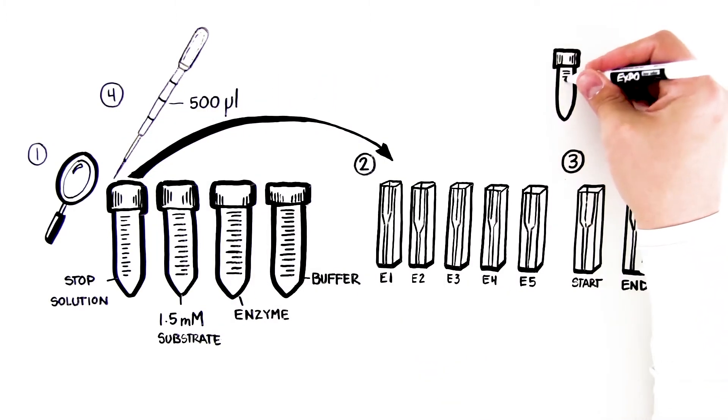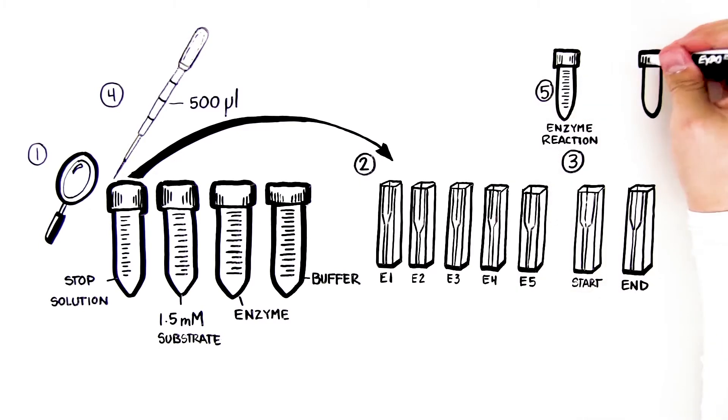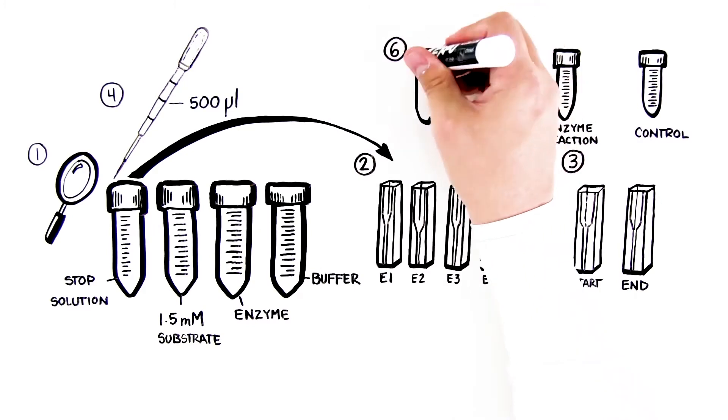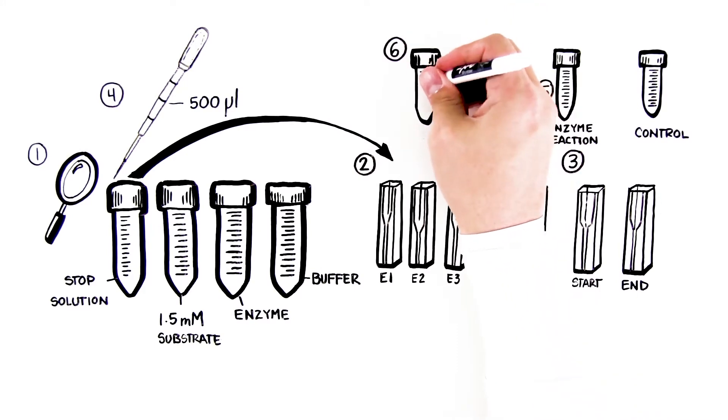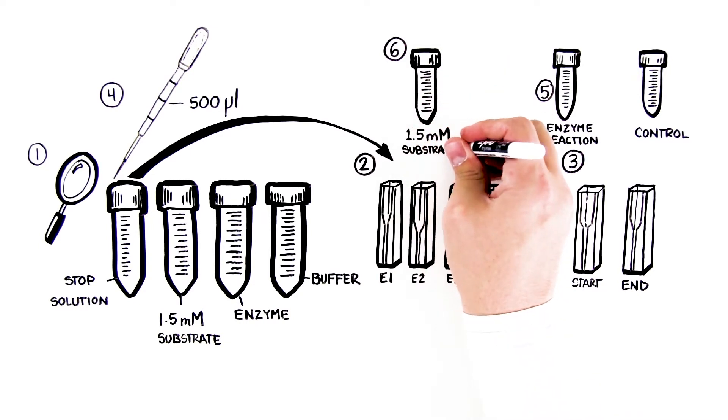Step 5: Label one empty 15ml conical tube enzyme reaction and the other control. Step 6: Using a clean DPTP, pipette 2ml of 1.5mM substrate into the 15ml conical tube labeled enzyme reaction.